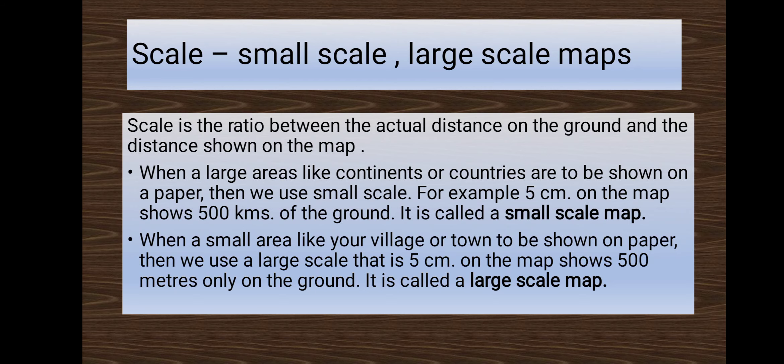When small areas like your city, town, house, or school are to be shown on paper, we use a large-scale map. For example, 5 centimeters equals 500 meters on the ground. Generally, large-scale maps give more information than small-scale maps.